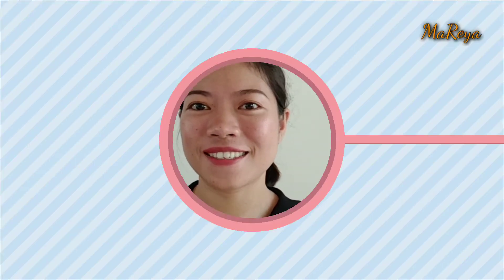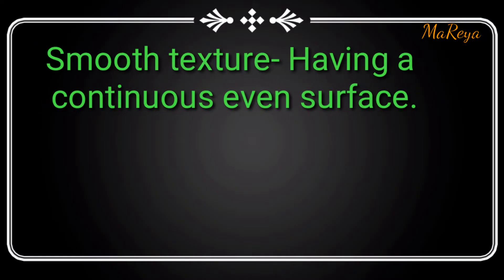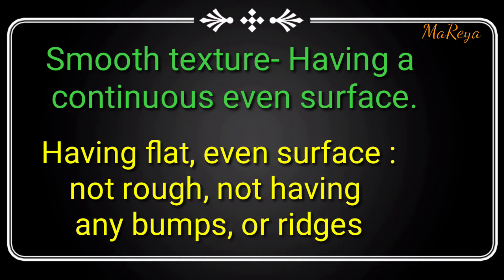So now, let's discuss what smooth objects are — smooth surfaces, smooth texture. Having a continuous even surface, having a flat even surface, not rough, not having any bumps or ridges. I will show you things that have a smooth surface.